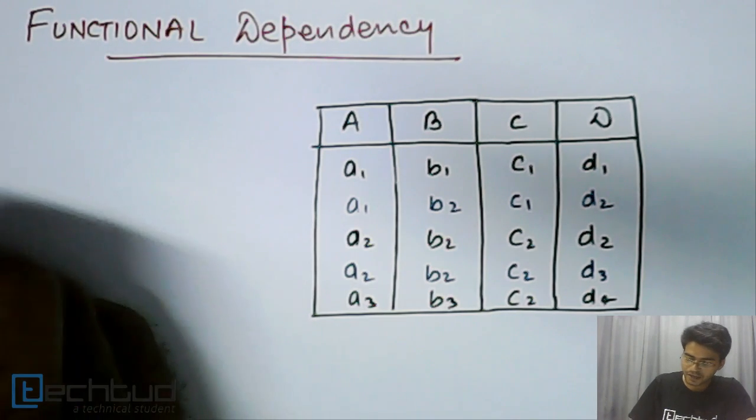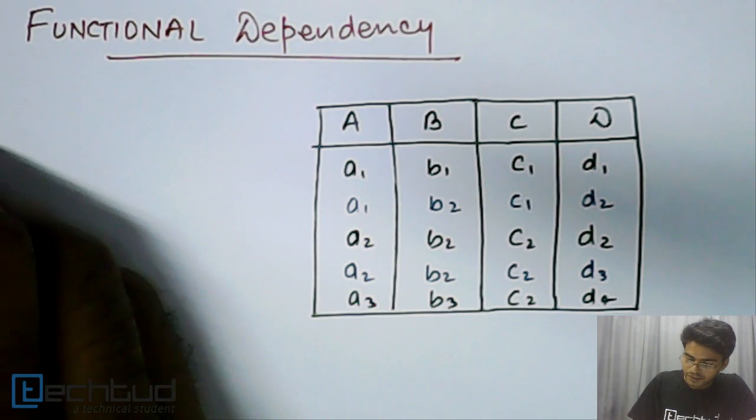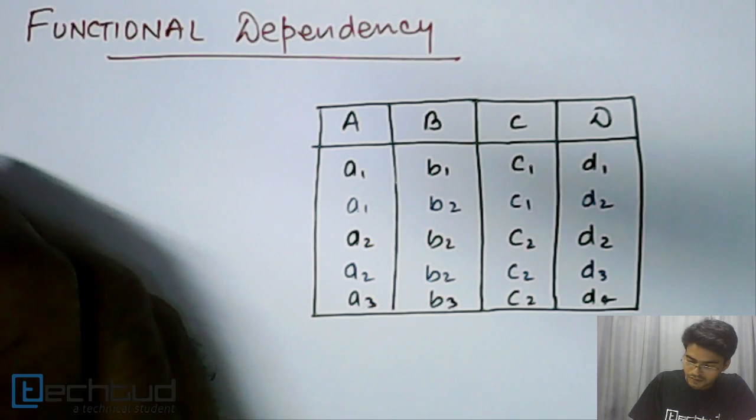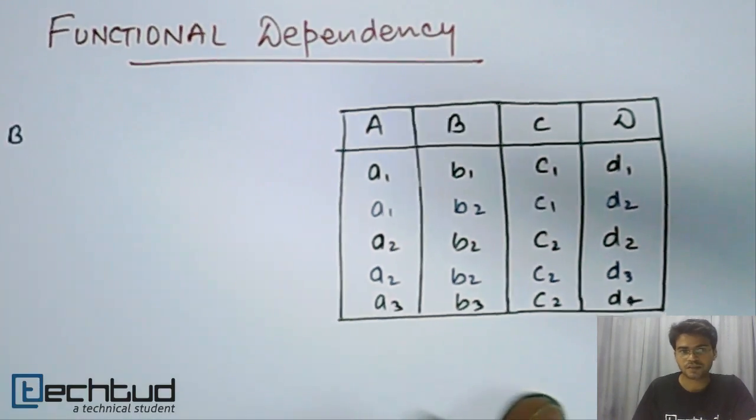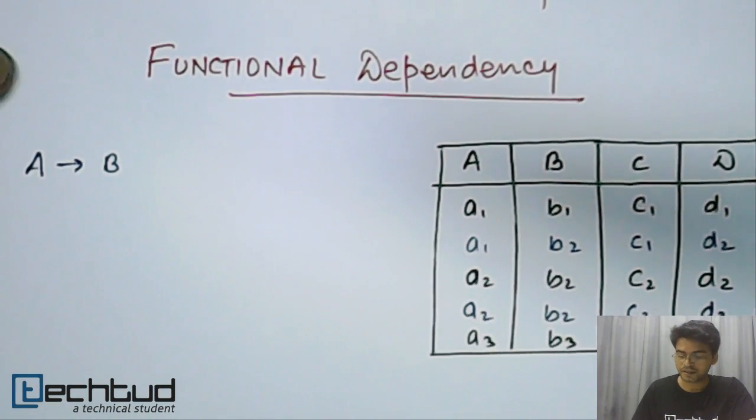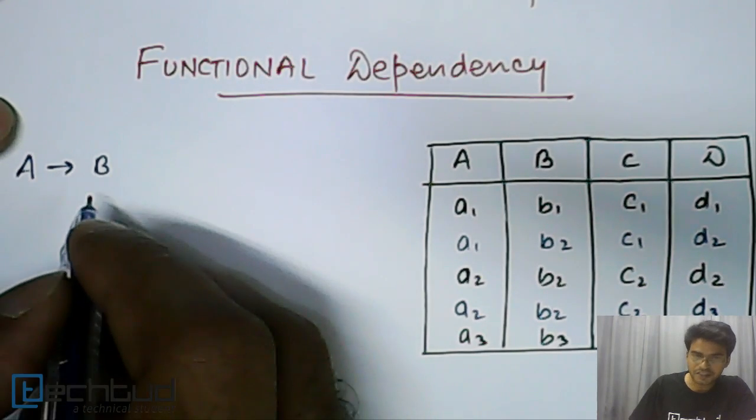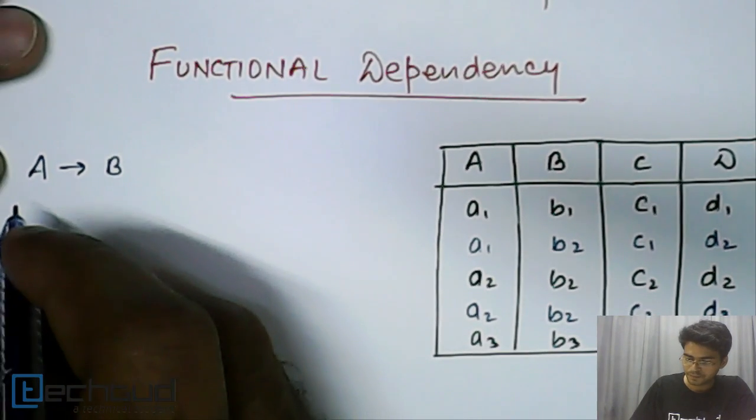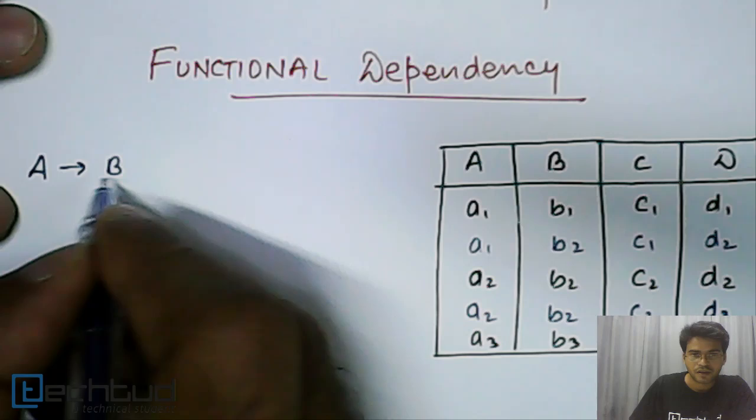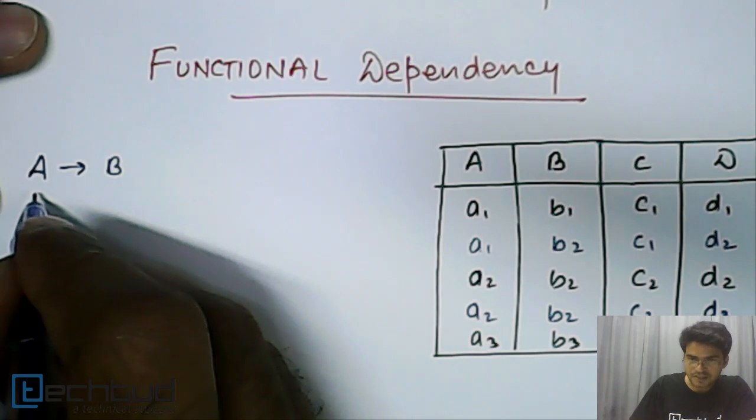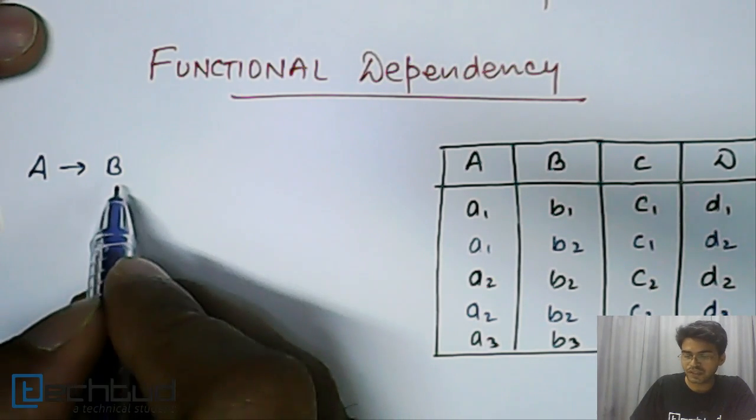When we say that A determines B, or A functionally determines B, it means for an instance of A we will have a unique value of B.